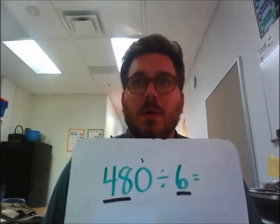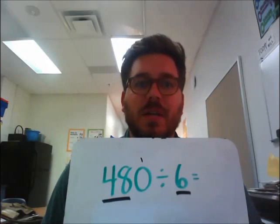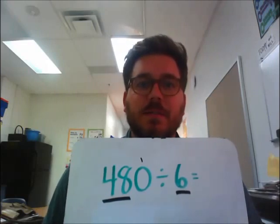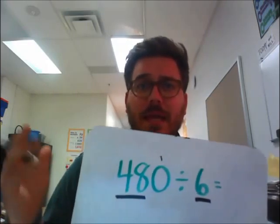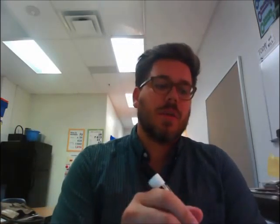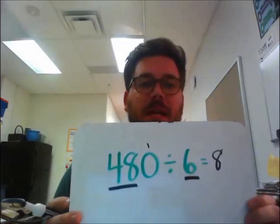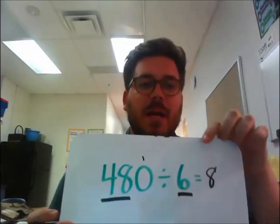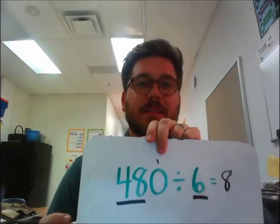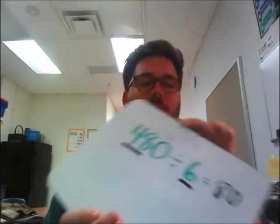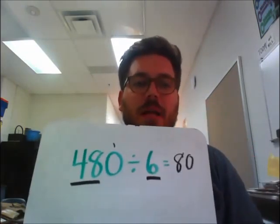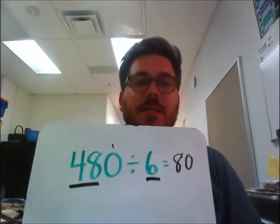Using what we know about our math facts, 48 divided by 6 is 8. So the answer to our base problem is 8, but we cannot forget about that one tallied 0, so we need to add that to our answer. So fully, 480 divided by 6 is 80.